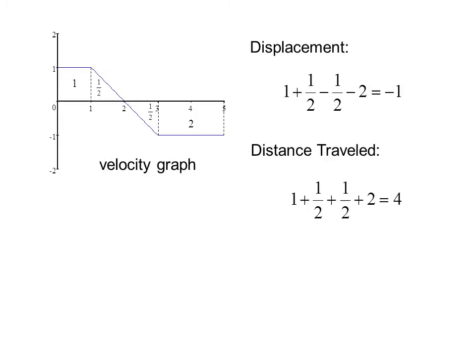Distance traveled would be 1 plus 1 half plus 1 half plus 2, or 4, because for distance traveled, we need to use absolute value.